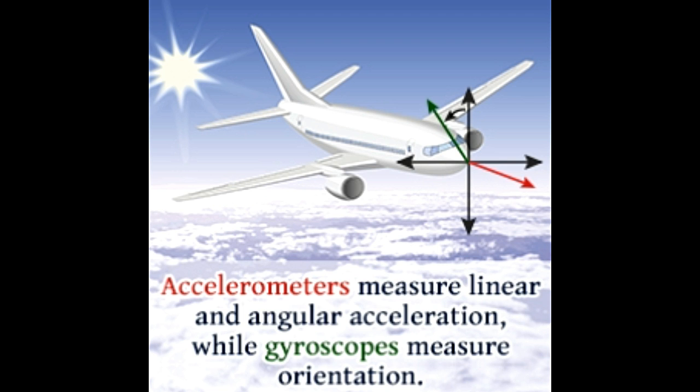The accelerometer and gyroscope are two measurement instruments which are useful for measuring certain important quantities related to the motion of an object.